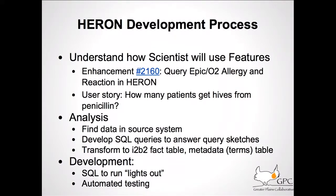So we get it all working and then the boss comes in and says we need allergies next month. This is our development process. The first thing we do is clarify the use case — a researcher wants to know, for example, how many patients get hives from penicillin. Then I go looking through the 6,000 tables in Clarity, look through their documentation and data dictionary, find the allergy data, write some SQL queries, and figure out where the data is to answer the question about allergic reactions and allergens. Then we write a little more code to transform this into the shape I2B2 expects. We run the stuff interactively, then do a bit more software engineering to get it running lights out with automated testing.